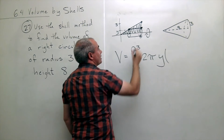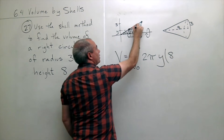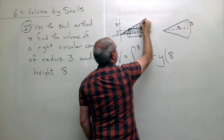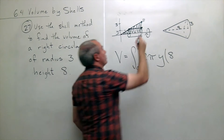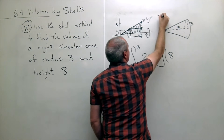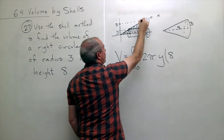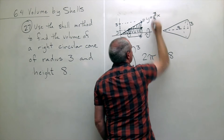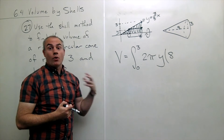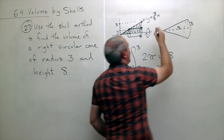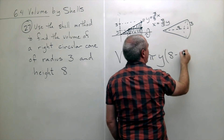The top function is x equals eight, and the bottom function is the slanted line. Using slope-intercept form, the intercept is zero, so it's y equals the slope times x. The rise is three and the run is eight, so the slope is three-eighths, giving y equals (3/8)x. But we want y's, not x's, so solving for x gives x equals (8/3)y, and that's exactly what we want.